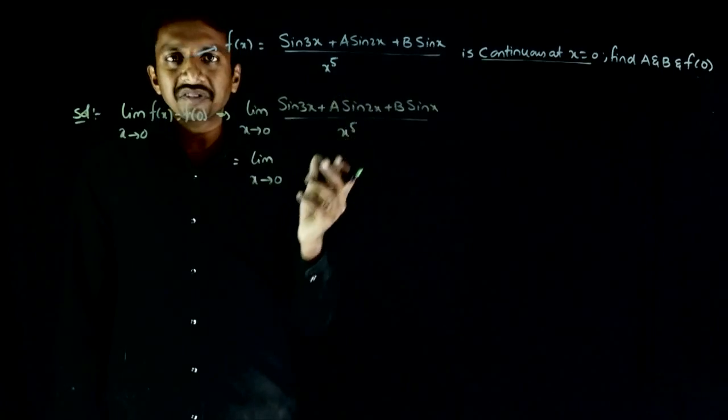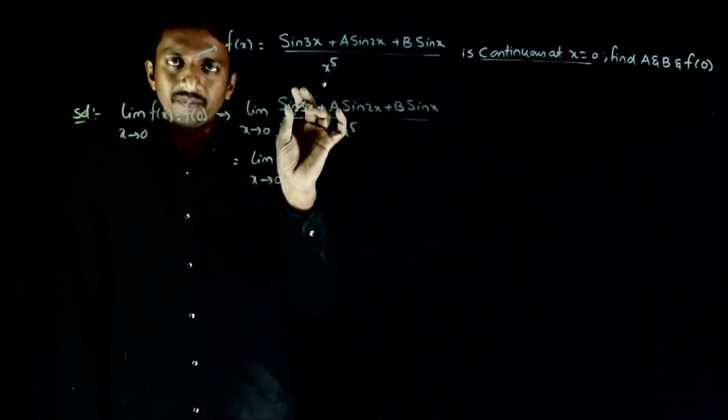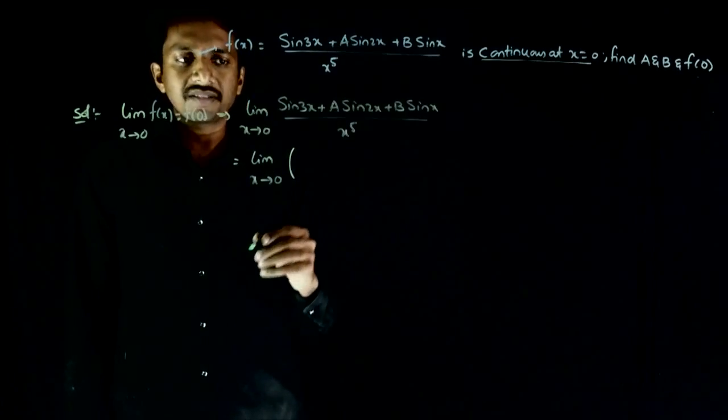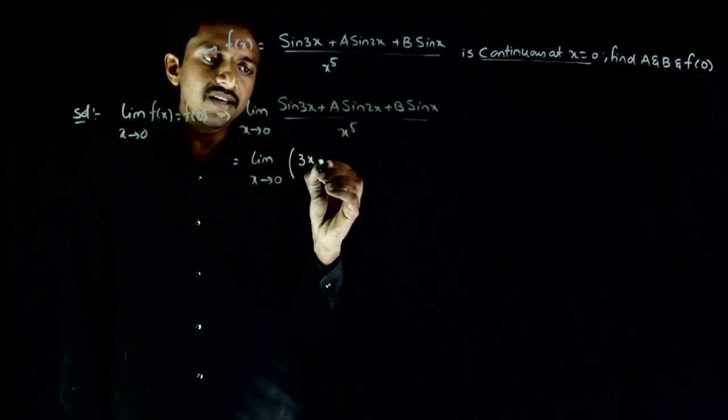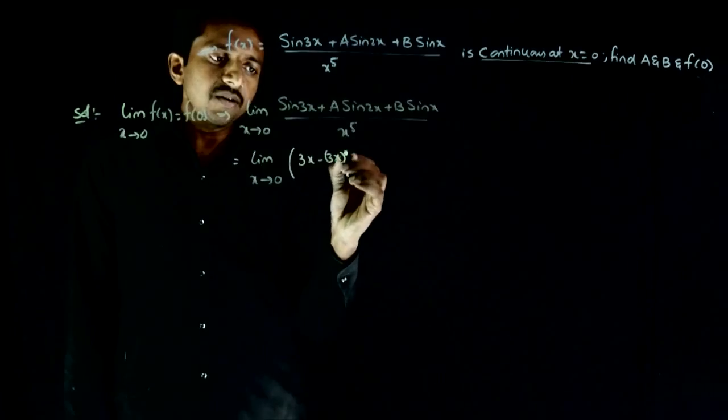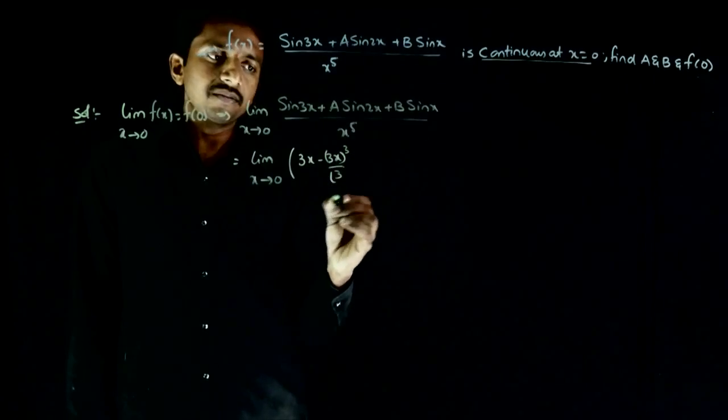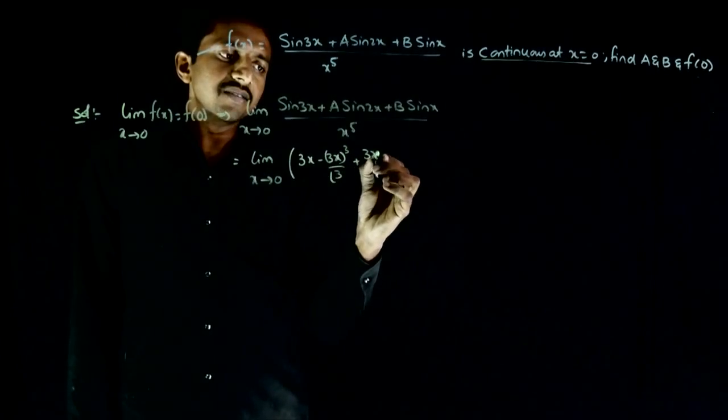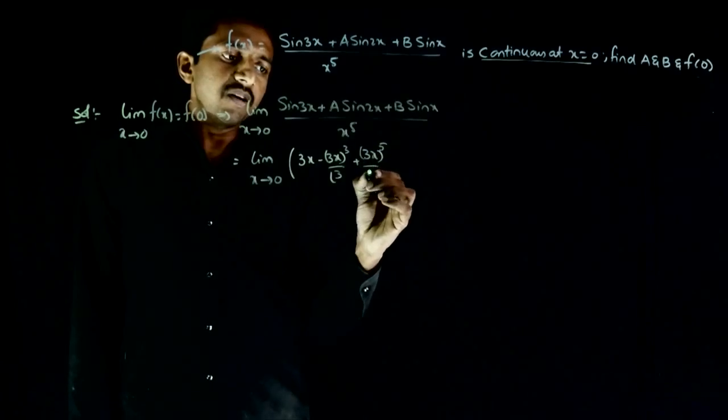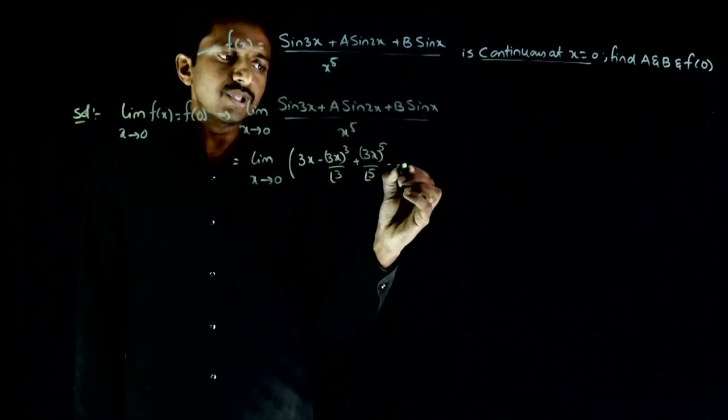Basic expansions need to be applied here. What is the expansion of sin 3x? 3x minus 3x whole cube by 3 factorial plus 3x whole power 5 by 5 factorial and so on.